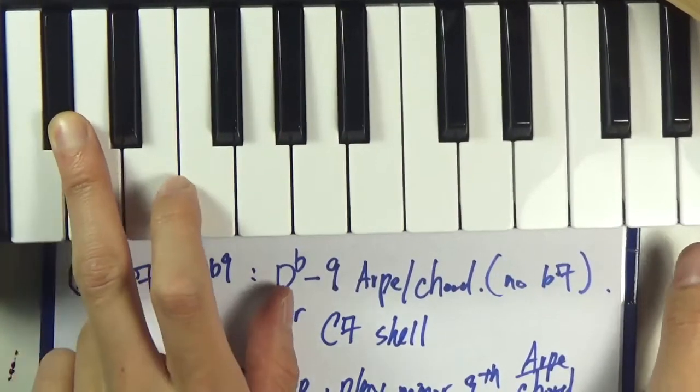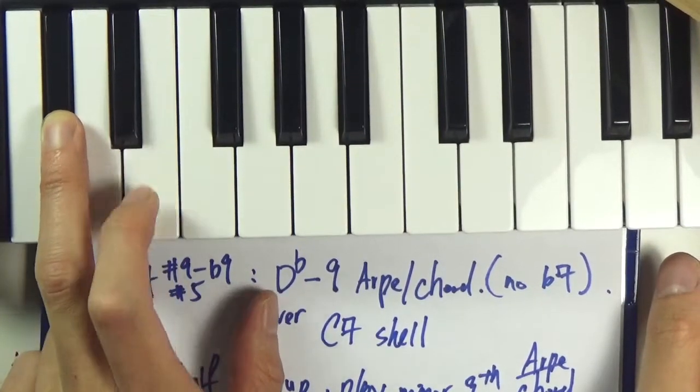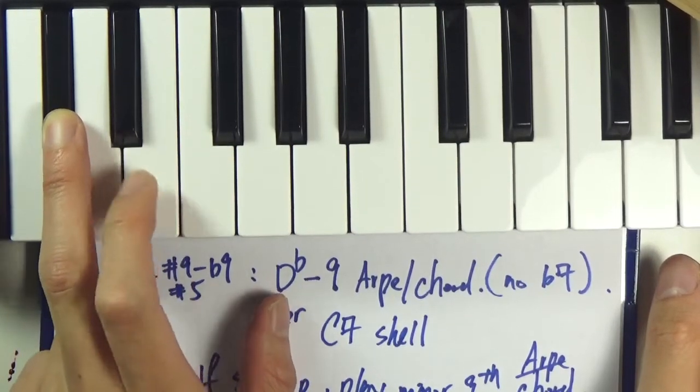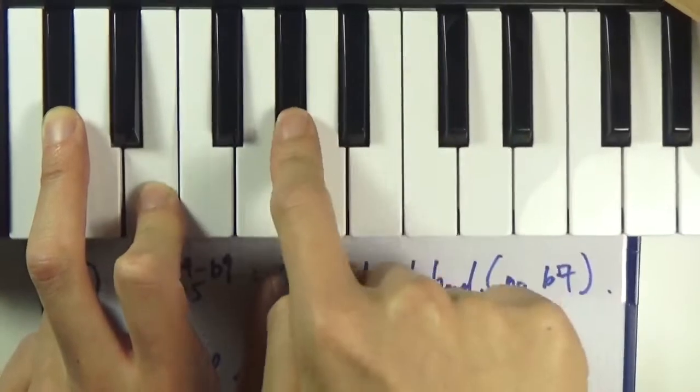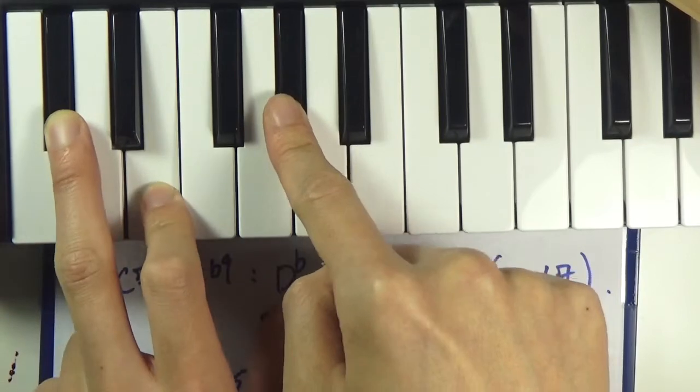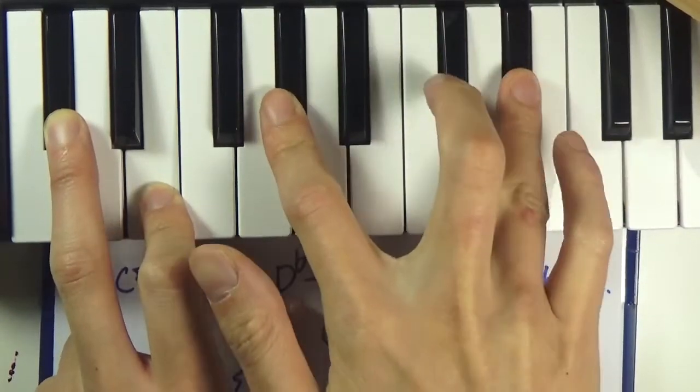The flat third of D-flat is actually the major third of C. And then you have A-flat, the fifth of D-flat minor, that's really sharp five of C. And then you have the major ninth of D-flat, which is really sharp nine of C.